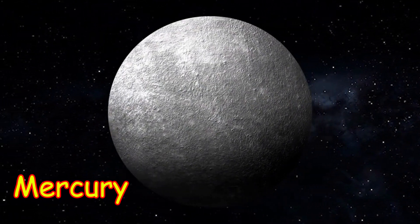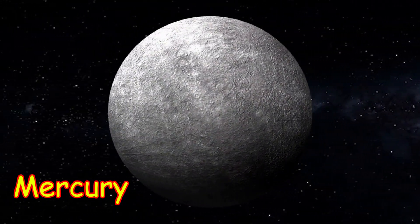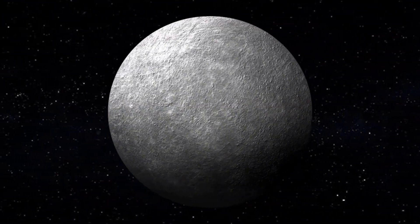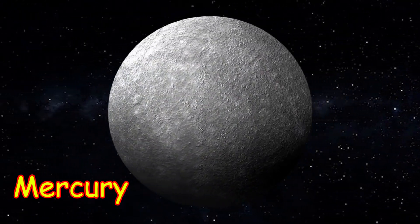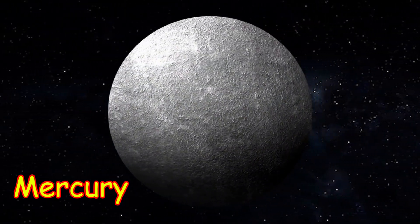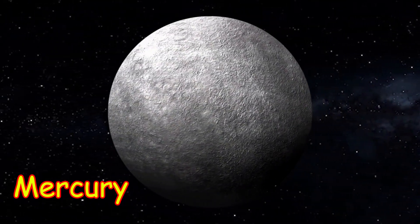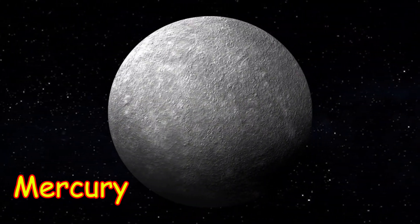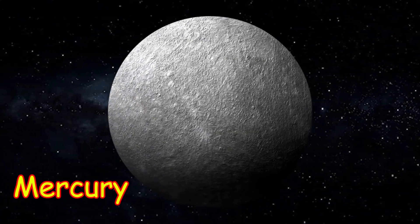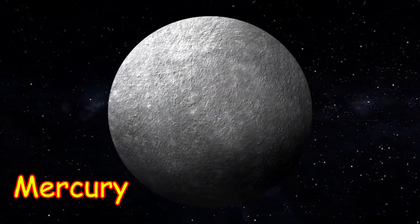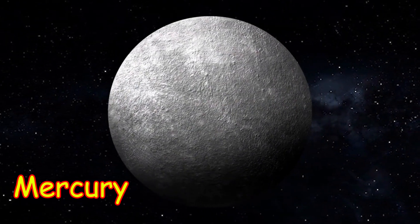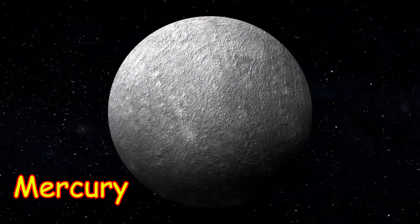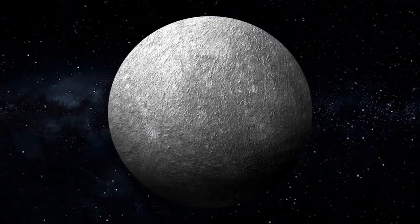Planetary data for Mercury. Asterisk: time required for the planet to return to the same position in the sky relative to the sun as seen from Earth. Mean distance from sun: 57,909,227 km, 0.39 astronomical unit. Eccentricity of orbit: 0.056. Inclination of orbit to ecliptic: 7.0 degrees. Mercurian year, sidereal period of revolution: 87.97 Earth days. Maximum visual magnitude: minus 1.9. Mean synodic period asterisk: 116 Earth days.